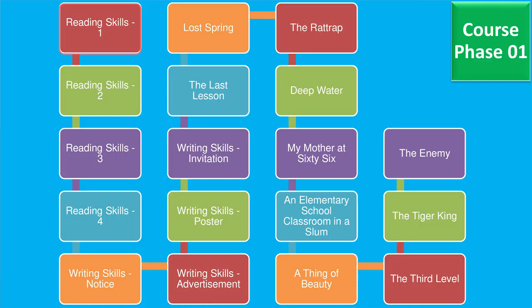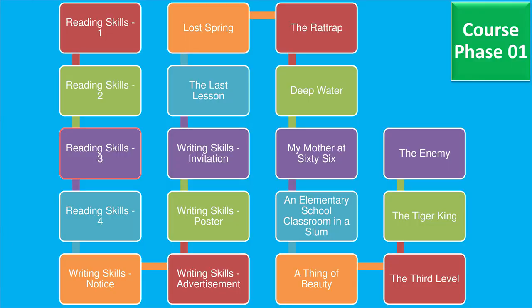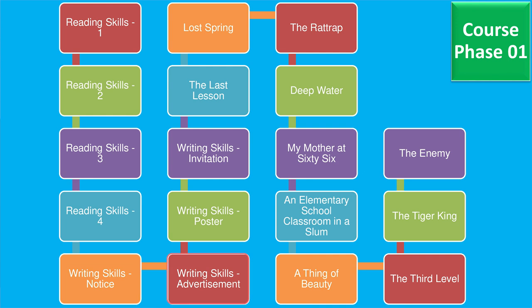The course will run in two phases. In the first phase of the course we have 20 modules. We have Reading Skills 1, Reading Skills 2, Reading Skills 3, Reading Skills 4, Writing Skills — Notice, Writing Skills — Advertisement, and additional Writing Skills modules 4 and 5.